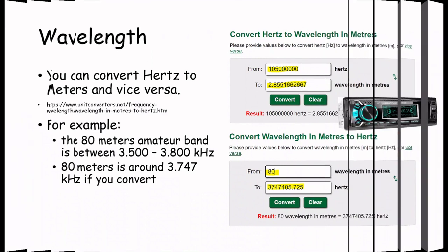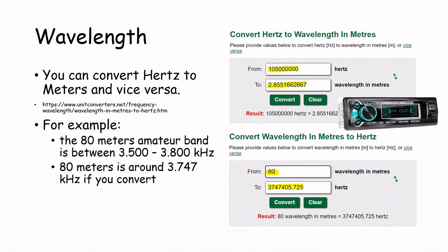You can convert hertz to meters and vice versa. That's why some radio receivers will display both of these measures. For example, the 80 meters amateur band is located between 3500 and 3800 kilohertz. If you convert 80 meters to hertz, this is about 3747 kilohertz. So this is how those measures are related.